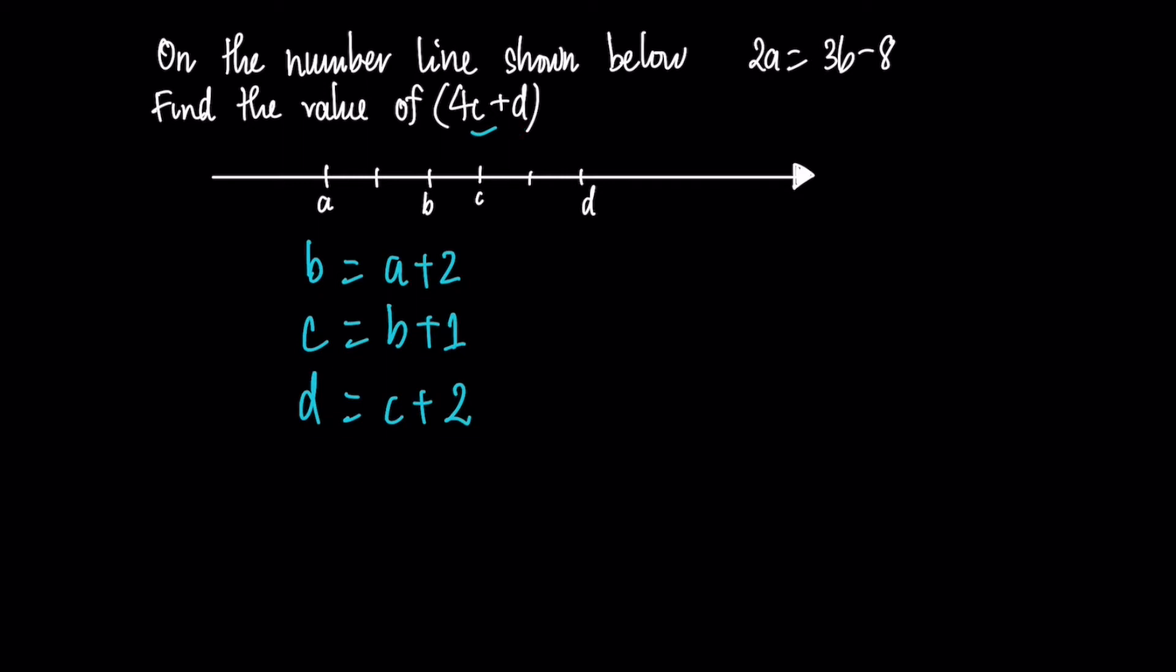But don't forget we have 2a equal to 3b minus 8. Since we have b equal to a plus 2, therefore we will substitute the value of b equal to a plus 2 inside this equation.